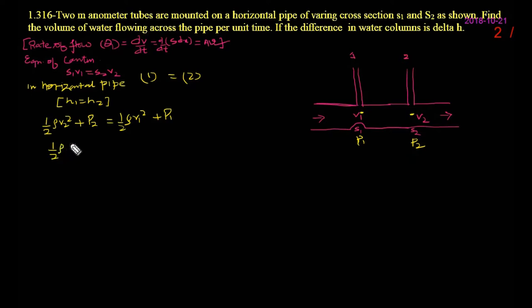Now, I can take half rho common and inside the bracket V2 square minus V1 square is equal to P1 minus P2. Now, further you can solve it. What is P1 minus P2? This is the pressure difference.